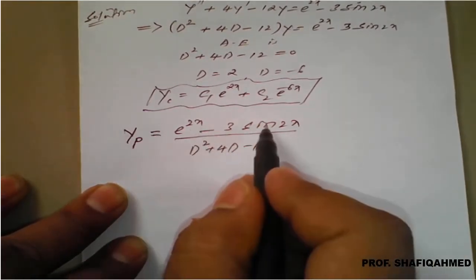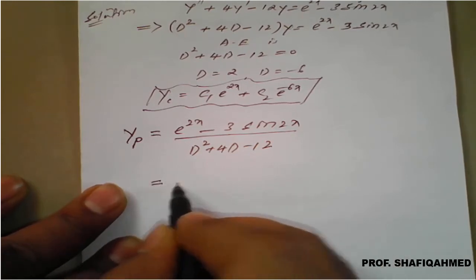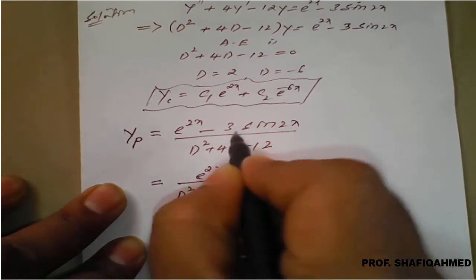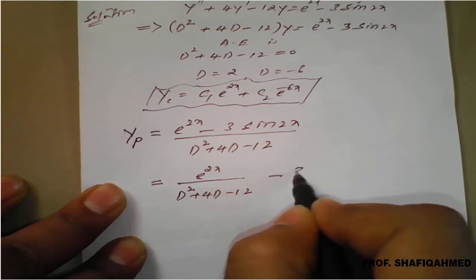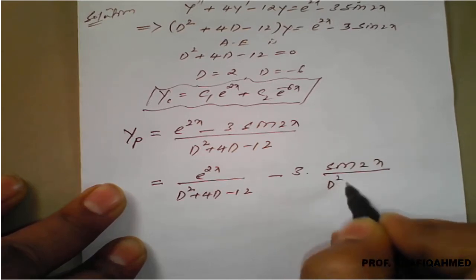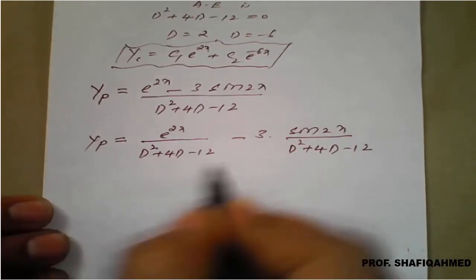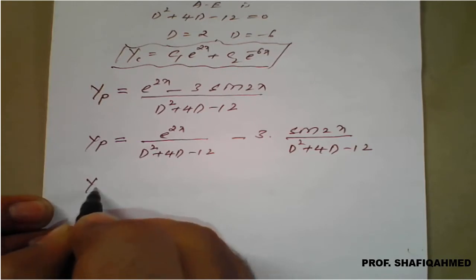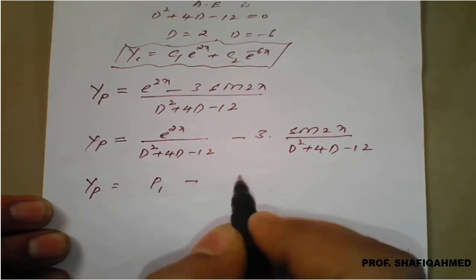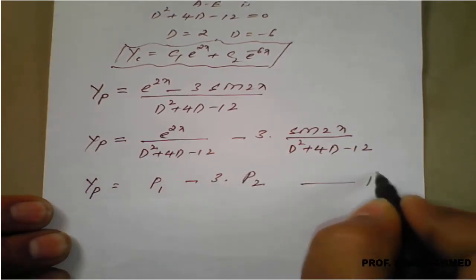Coming to the particular integral: yp is given by the right hand side, which is e raised to 2x minus 3 times sin of 2x, divided by the auxiliary equation d squared plus 4d minus 12. We have two terms in the numerator — e raised to 2x and 3 times sin 2x — so we will separate them.